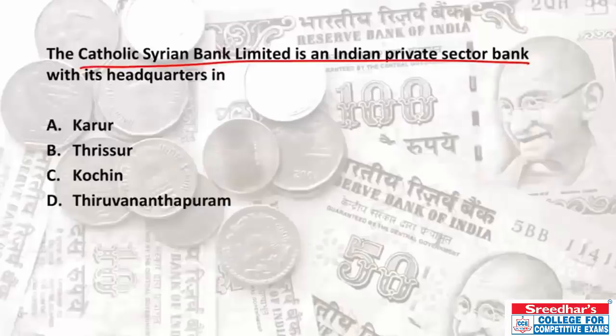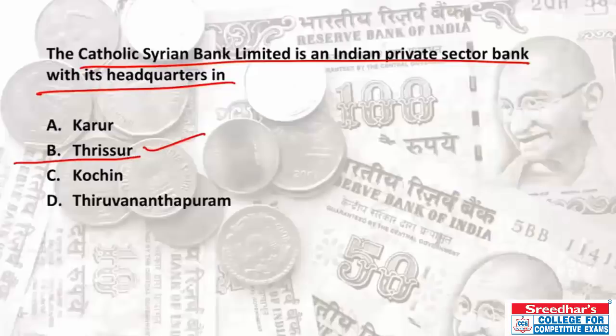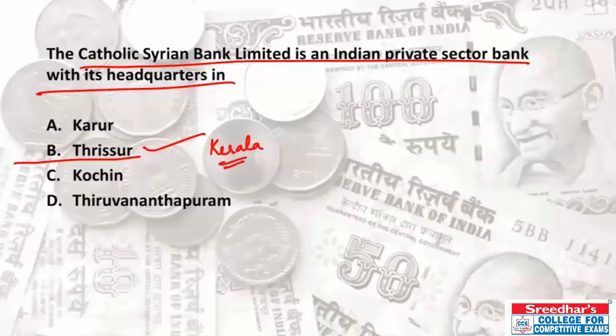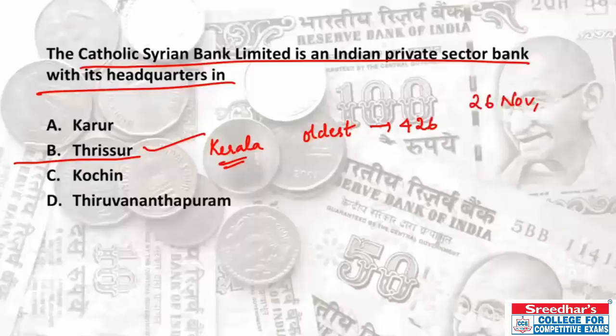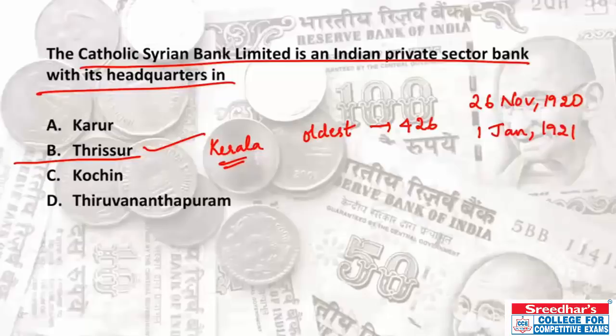The Catholic Syrian Bank Limited is an Indian private sector bank headquartered in Thrissur, Kerala. It is one of the oldest banks in India with a network of over 426 branches across the country. It was founded on 26th November 1920, well before Indian independence, and opened for business on January 1st 1921 with an authorized capital of 5 lakhs and a paid-up capital of 45,000.